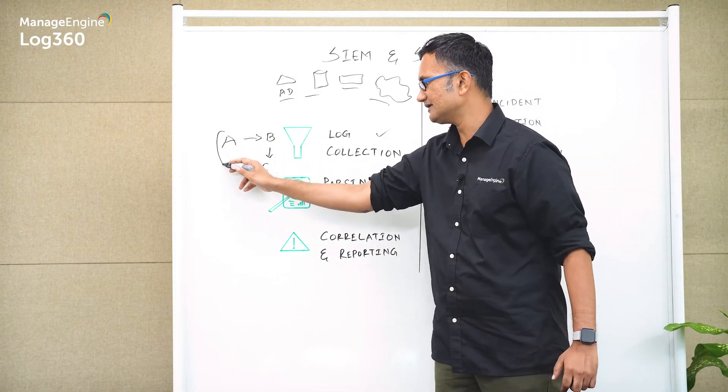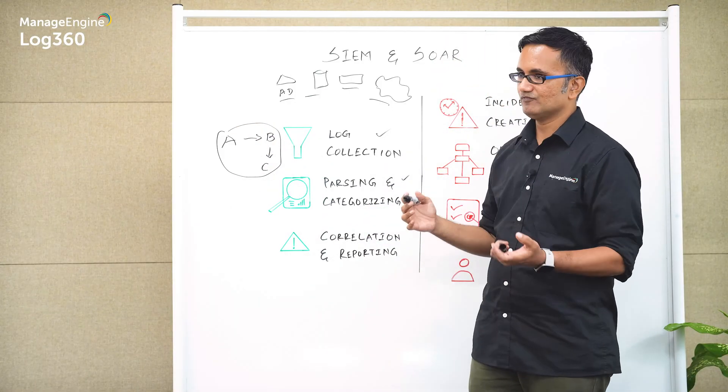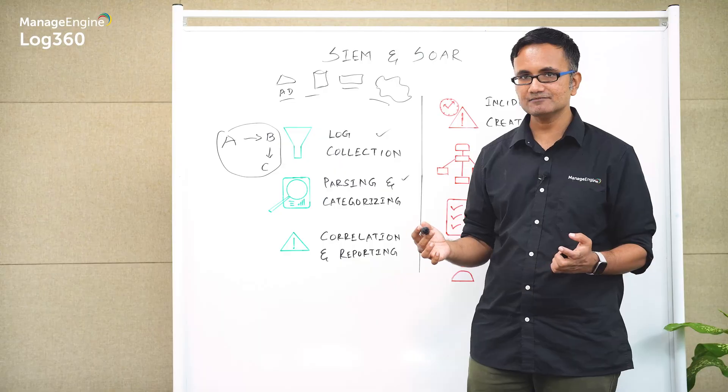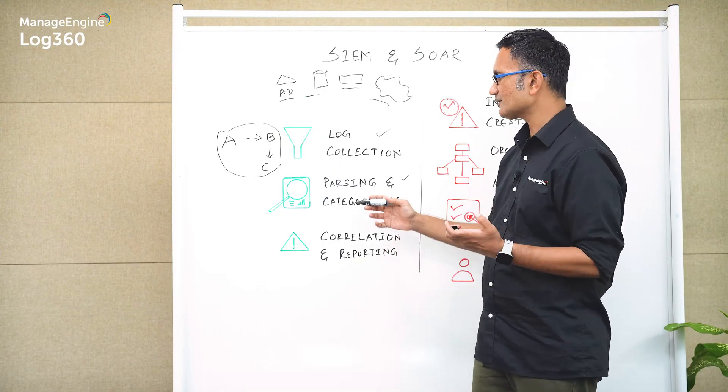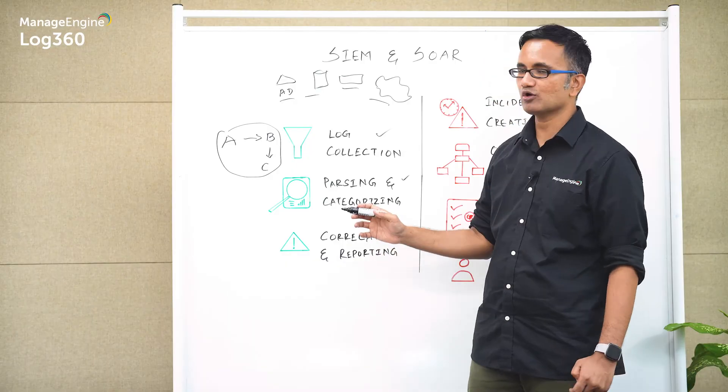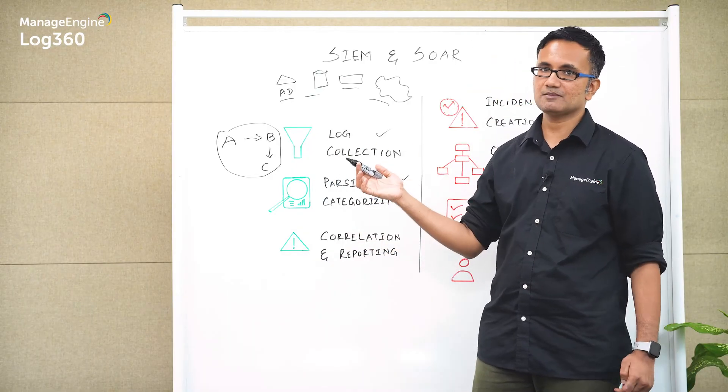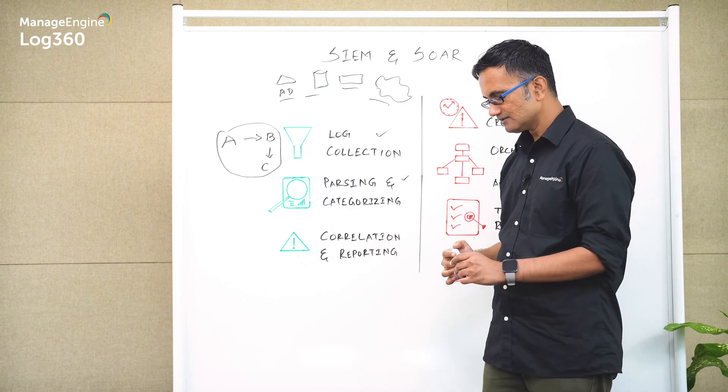So your SIEM solution has got to have the capability to correlate all of these three events together and say that, well, this is something that's not expected—it's an alert. So it's got to be able to correlate things, send out an alert to you, and also report all of these findings. So all of these are what make up a SIEM solution.